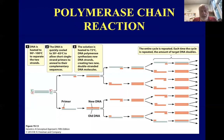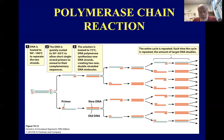Heating the DNA makes it single-stranded; cooling back down somewhere between 30 to 65°C allows the primers to anneal. The primers provide the 3' OH necessary for Taq polymerase to add more nucleotides, then synthesis of the new DNA occurs. This is repeated 30 to 32 times, and in a few hours you can get almost billions of copies of DNA molecules from a small starting amount.